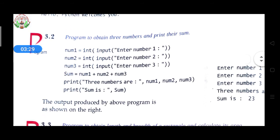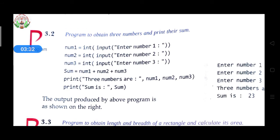Now come to the second program: obtain three numbers and print their sum. The user has to give three numbers — num1, num2, num3 — and then we give instructions to add them. While adding, we initialize one more variable to store the sum, then print it.